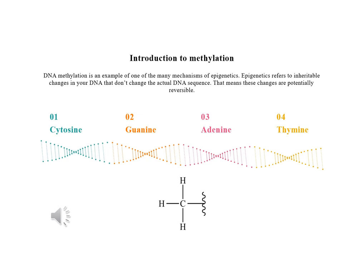These changes are potentially reversible. Your DNA consists of four bases called cytosine, guanine, adenine, and thymine. A chemical unit called a methyl group, which contains one carbon and three hydrogen atoms, can be added to cytosine. When this happens, the area of the DNA is methylated. When you lose that methyl group, the area becomes demethylated.